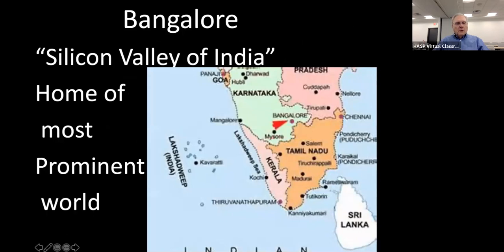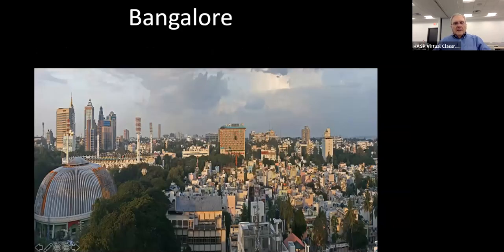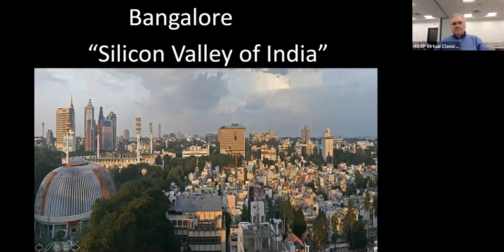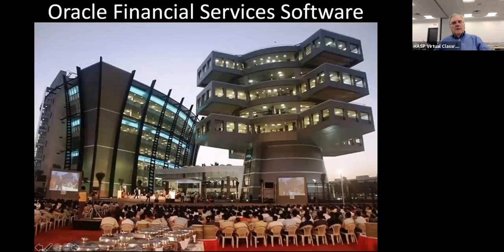Bangalore is known as the Silicon Valley of India — home to the most prominent rural companies located there. Here is a picture of Bangalore and one of its industries: the Oracle Financial Services software building. The Oracle Financial Services are worldwide; I believe the headquarters are in California, but this is some kind of a building. I imagine a few people listening to this know about this financial services company.